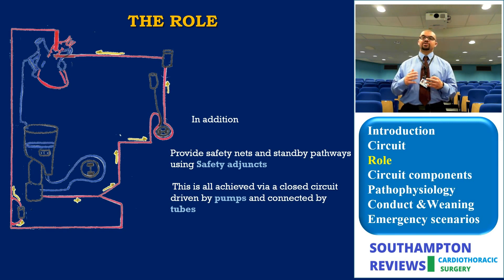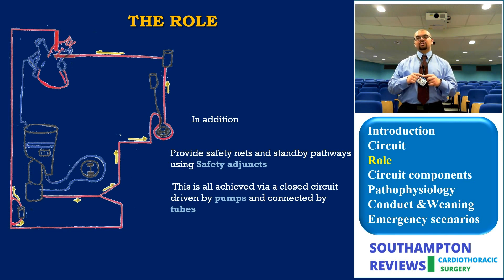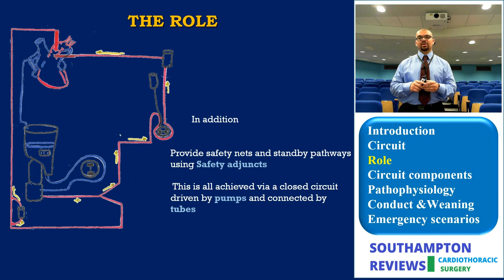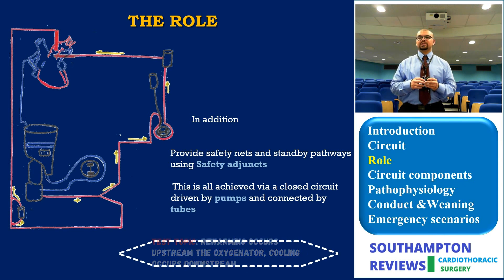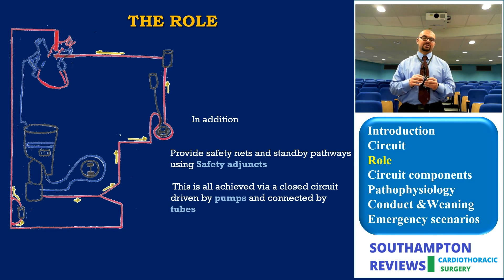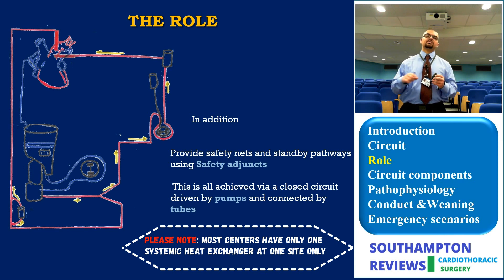Pressure and flow meters have the ability to switch off the circuit if anything goes wrong. The architecture of the circuit is also designed in such a manner to prevent these events. For instance, the presence of the heat exchanger upstream of the oxygenator protects from creating bubbles — that's in the case of warming. However, in cooling, the opposite applies: cooling occurs after the oxygenator because cooling increases the solubility of gases in solution and hence reduces the possibility of creating bubbles. There is always a bubble detector and side arm after the oxygenator to protect from any inadvertent air emboli.